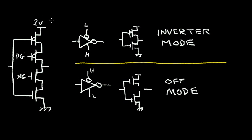Here I've shown the tri-state driver that we described in a previous video, but let's recap here in case you didn't see the previous video. This is the input to the tri-state driver, and this is the output. I want to explain two different modes of operation for this tri-state driver. The first mode is when this PMOS transistor is on and the NMOS transistor here is also on.